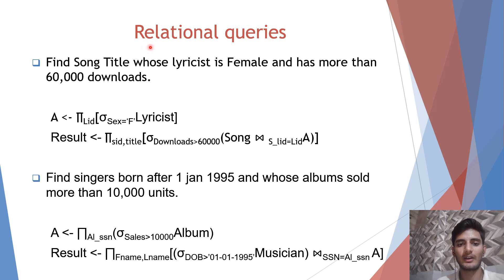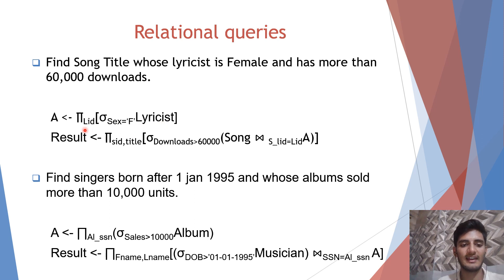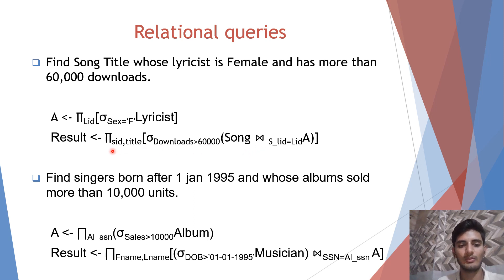In this part of the video we will be talking about relational queries. The first query is: find the song title whose lyricist is female and has more than 60,000 downloads. First, we will be selecting all the female lyricists and projecting lid from there, which will be stored in A. We will then join table song and A wherever slid is equal to lid, selecting all rows where downloads is greater than 60,000, and projecting sid and title, which will be stored in result.